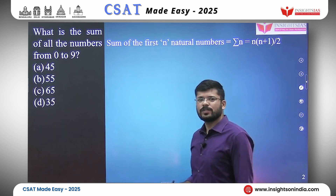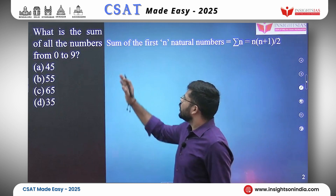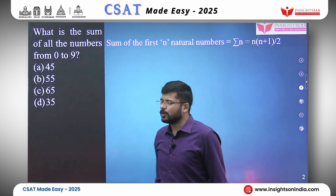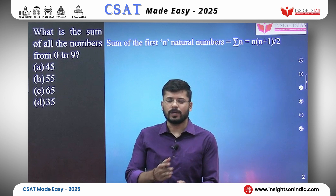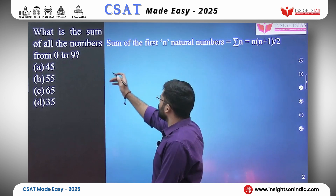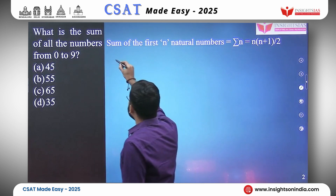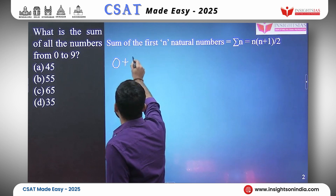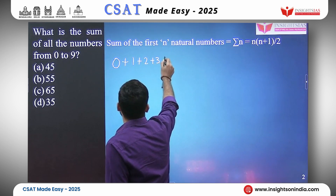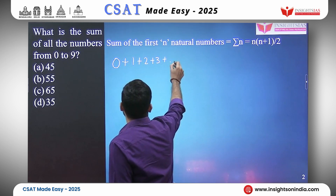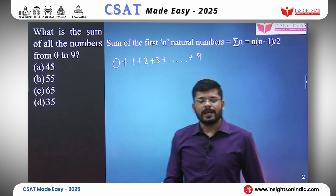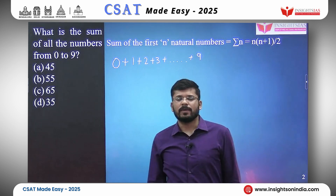This is the first question: What is the sum of all the numbers from 0 to 9? Let us count the numbers from 0 to 9. We can actually manually count them since the numbers are less here. However, there is a formula readily available for it.